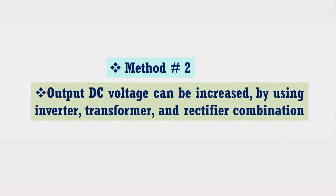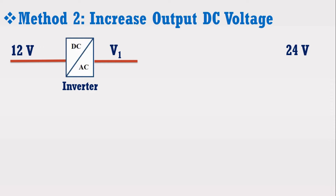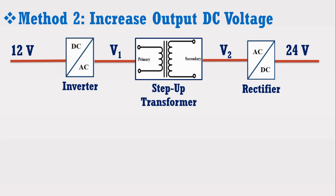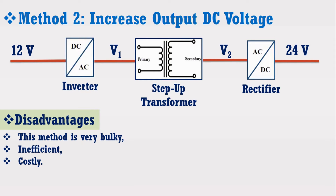Let's discuss the second method of increasing the output DC voltage. Suppose we have a DC voltage of 12V and we want to increase it to 24V. This can be obtained by first converting the 12V DC voltage into AC voltage using an inverter, and then converting that AC voltage into 24V DC voltage using a rectifier. However, this method has the disadvantage that it is very bulky, inefficient, and very costly.